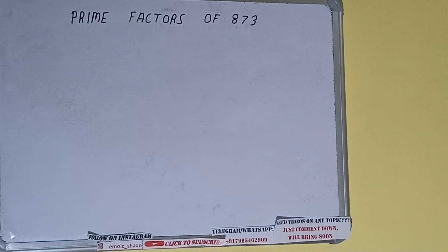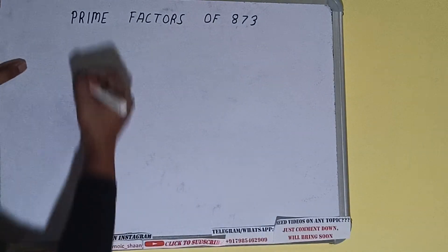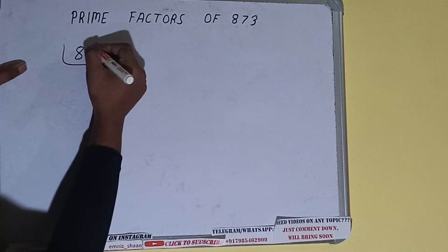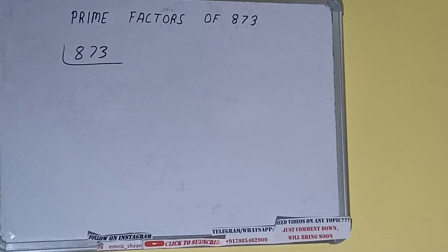Hello friends, and in this video I'll be helping you with the prime factors of the number 873. So let's start. First of all, we need to write the number like this. The next thing we need to know about is what are prime numbers. So prime numbers are numbers that are divisible by one and the number itself, like two, three, five, seven, and so on.